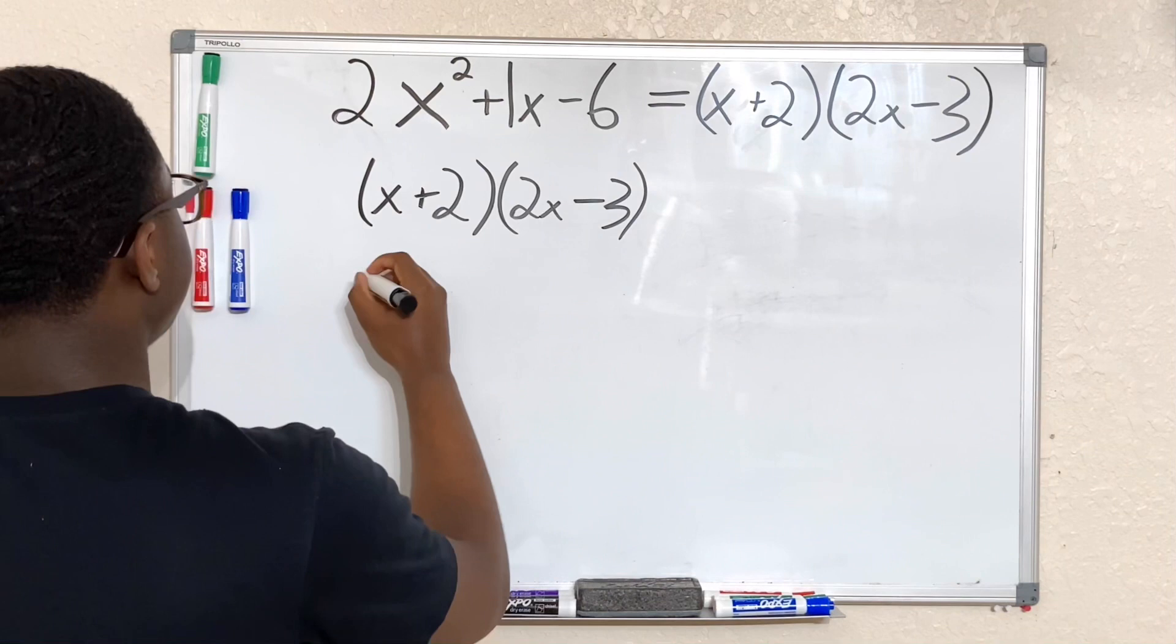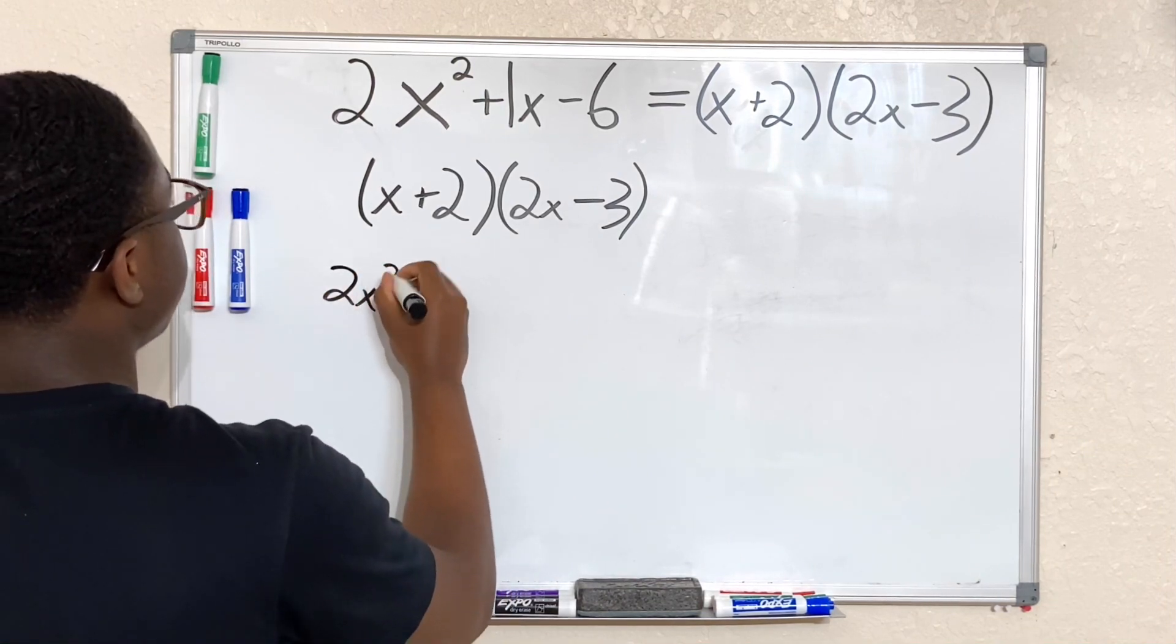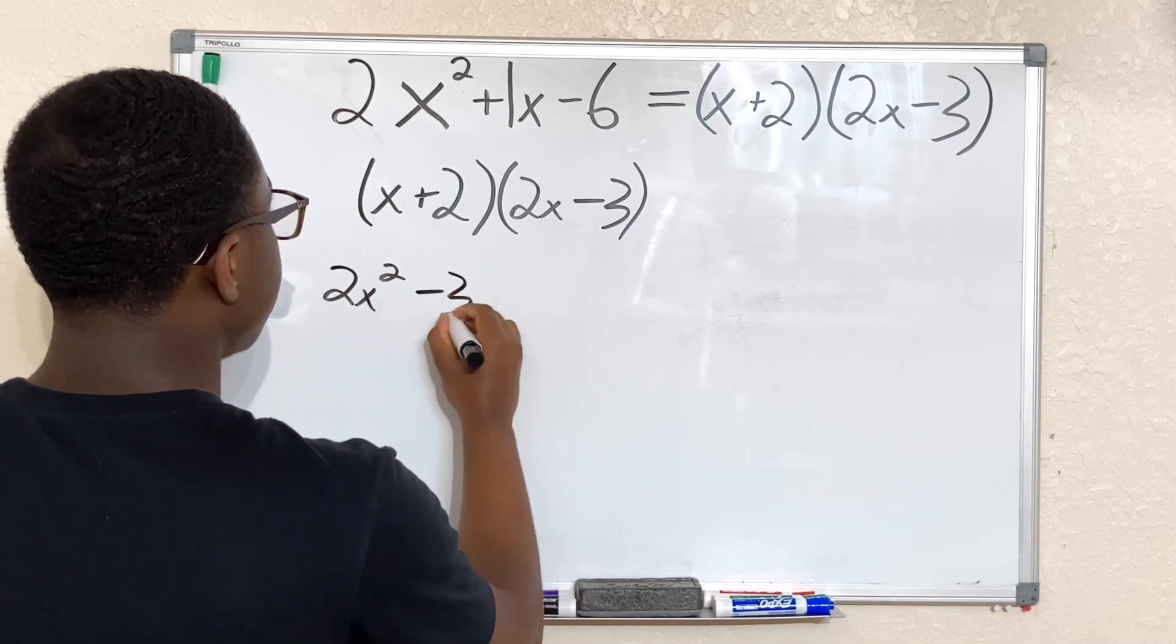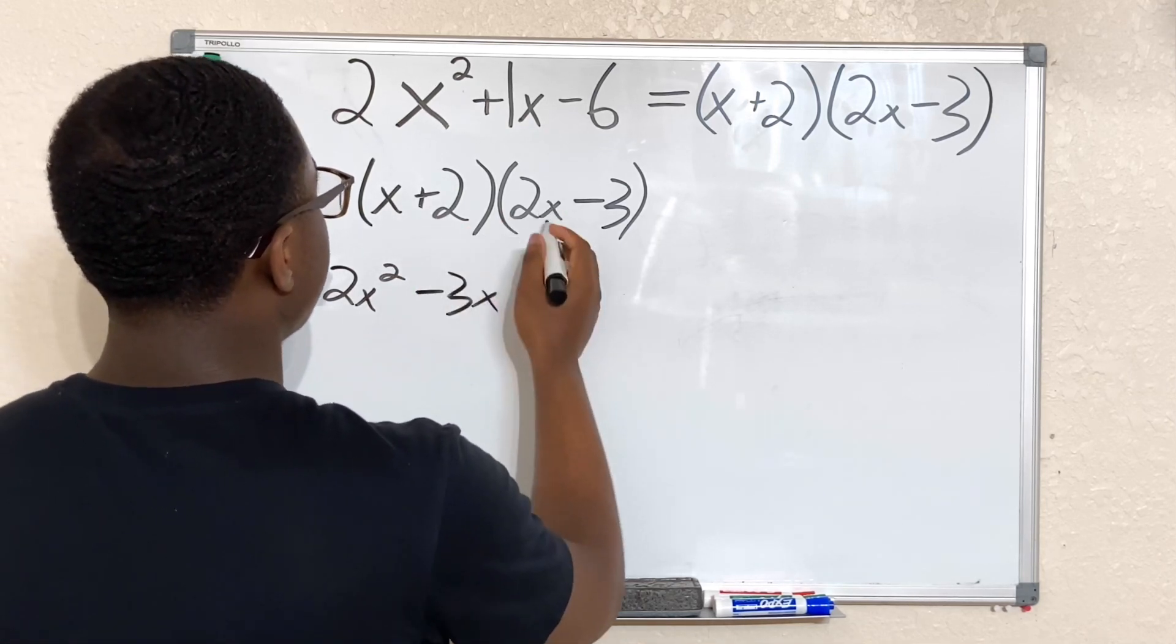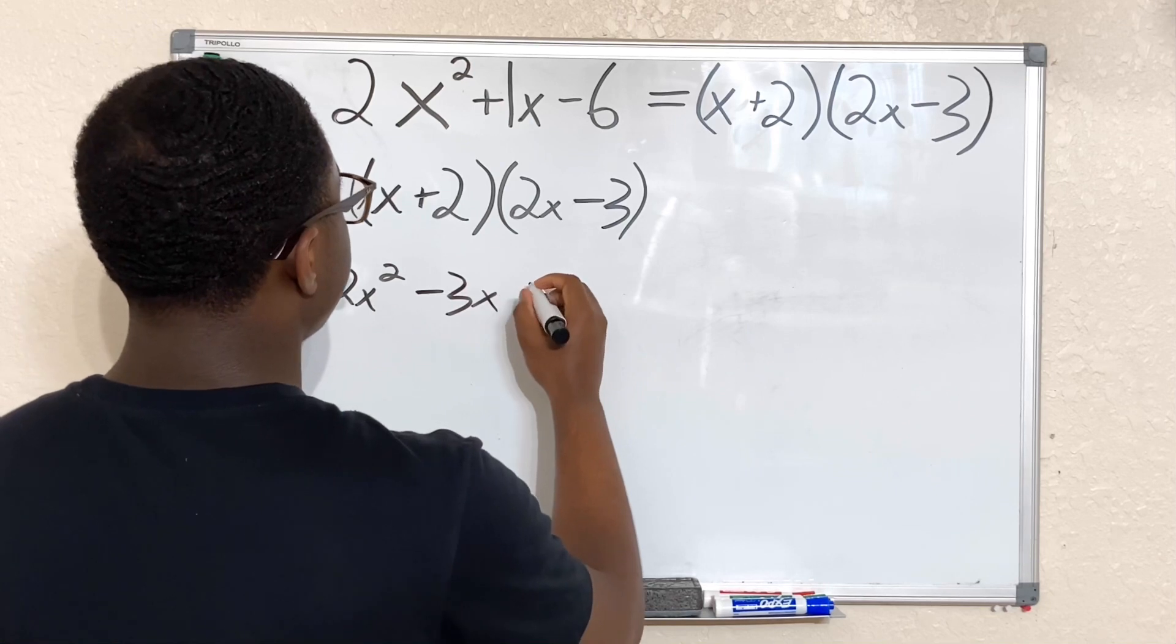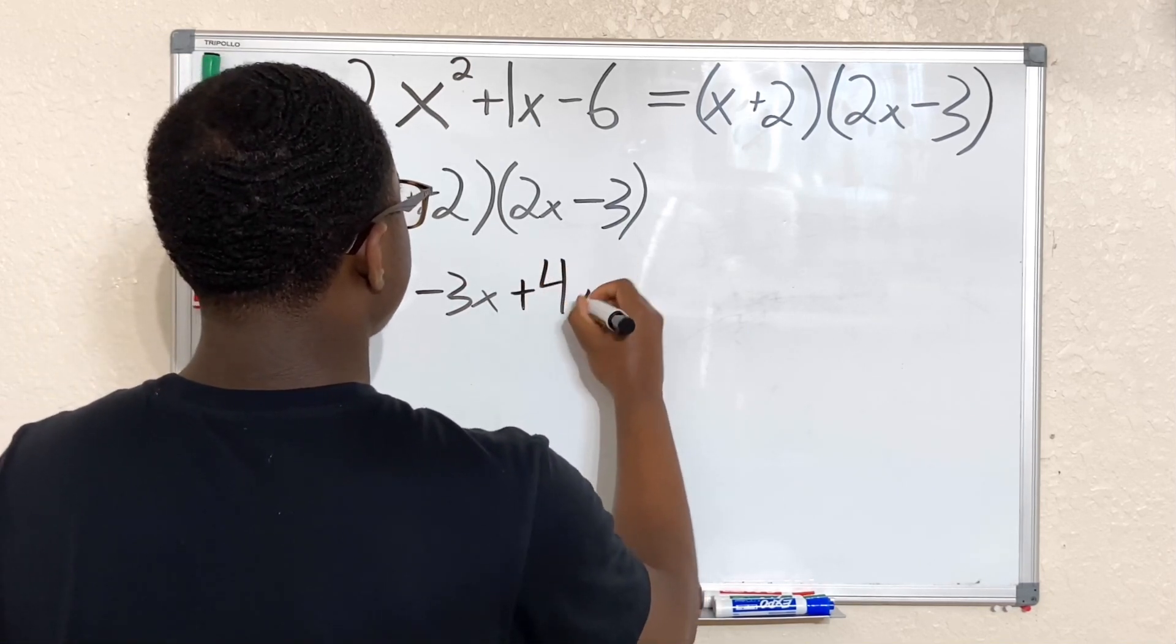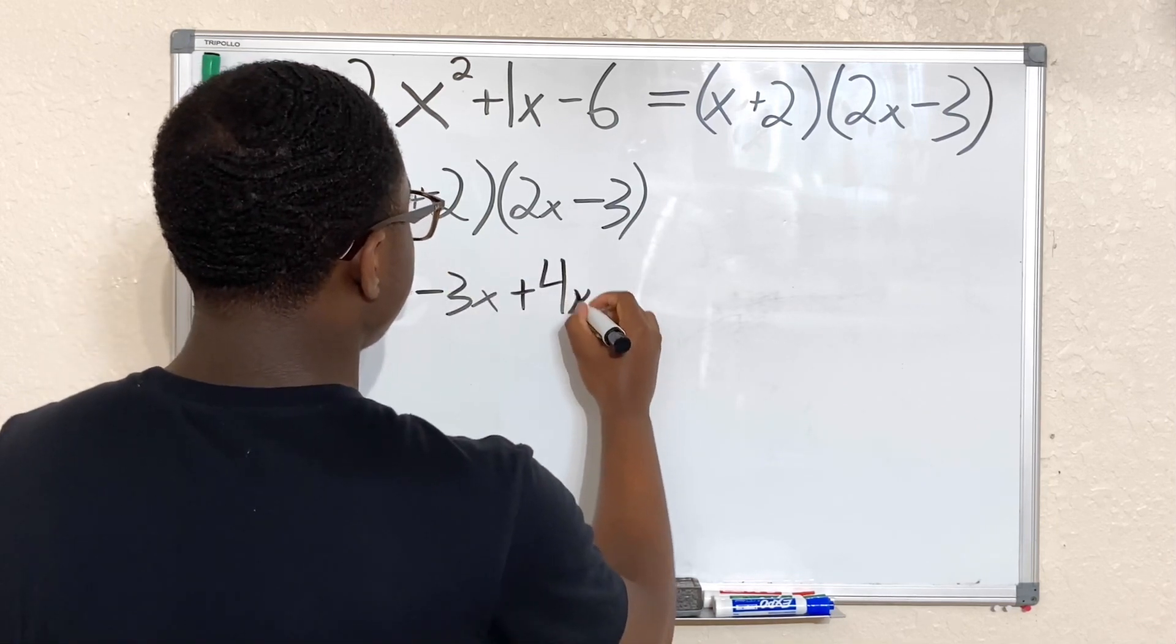So all we have to do is FOIL. We have 2x times x—that would give us 2x squared. We have x times -3—that'll give us minus 3x. We have 2 times 2x—that'll give us 4x, so plus 4x. And 2 times -3, that will give us -6.